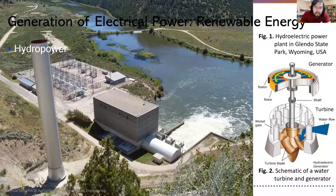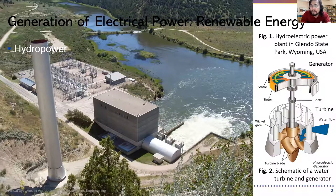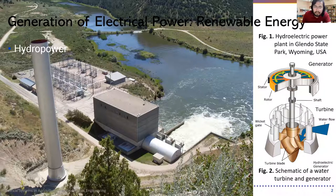Unlike in conventional power plants, the turbines in hydropower plants are powered by liquid water. In conventional power plants, steam is used to power the turbines.